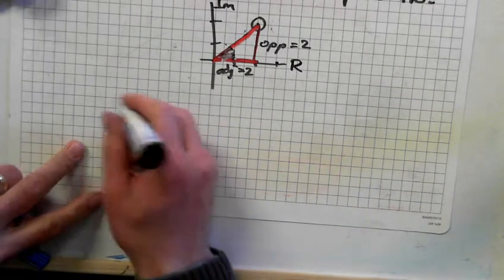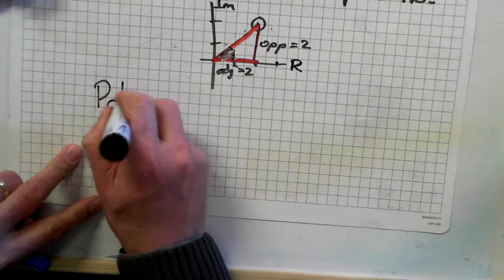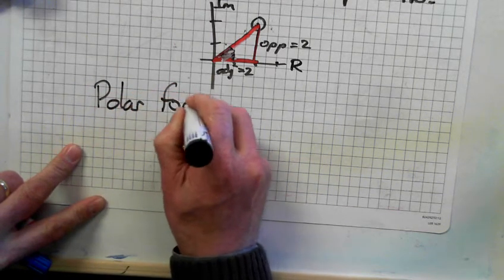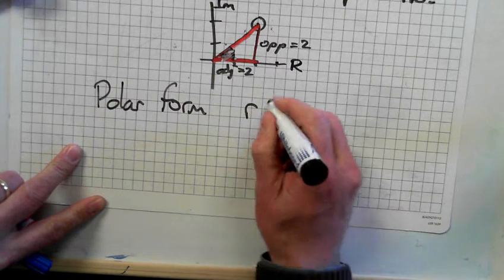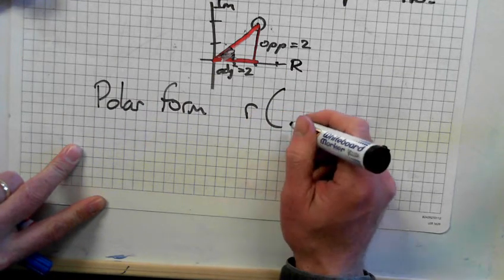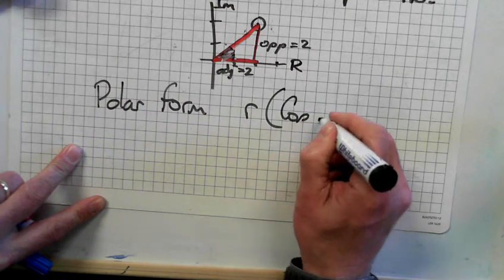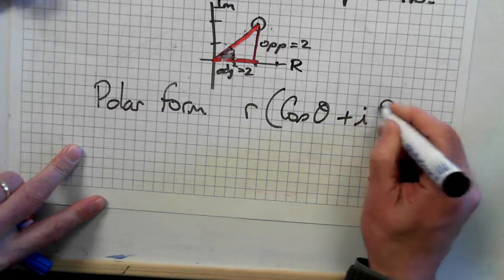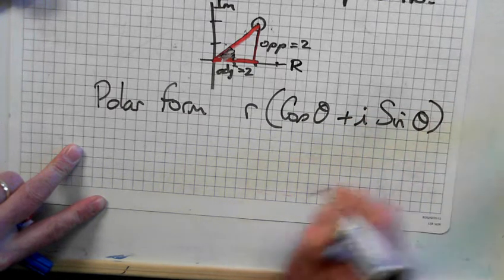To write it in polar form, this is the formula. It's R, which is the radius, times cos theta plus i sine theta.